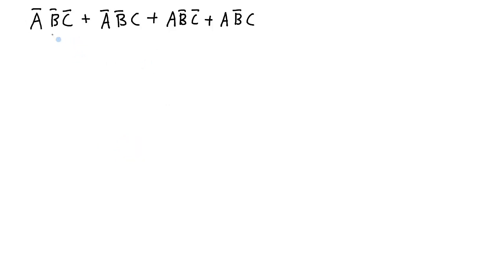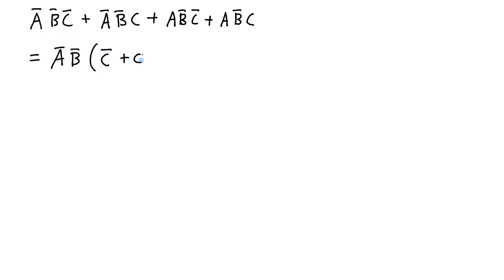Another example of the power of factoring — I have this sum of products expression. In each one of these products, I'll look for common expressions I can factor out. In these two terms here, I see NOT a·NOT b and NOT a·NOT b. So I'll factor that out: NOT a·NOT b factored out leaves me NOT c and c. NOT c OR c will just be one, so basically that goes away, and I'm just left with NOT a·NOT b.